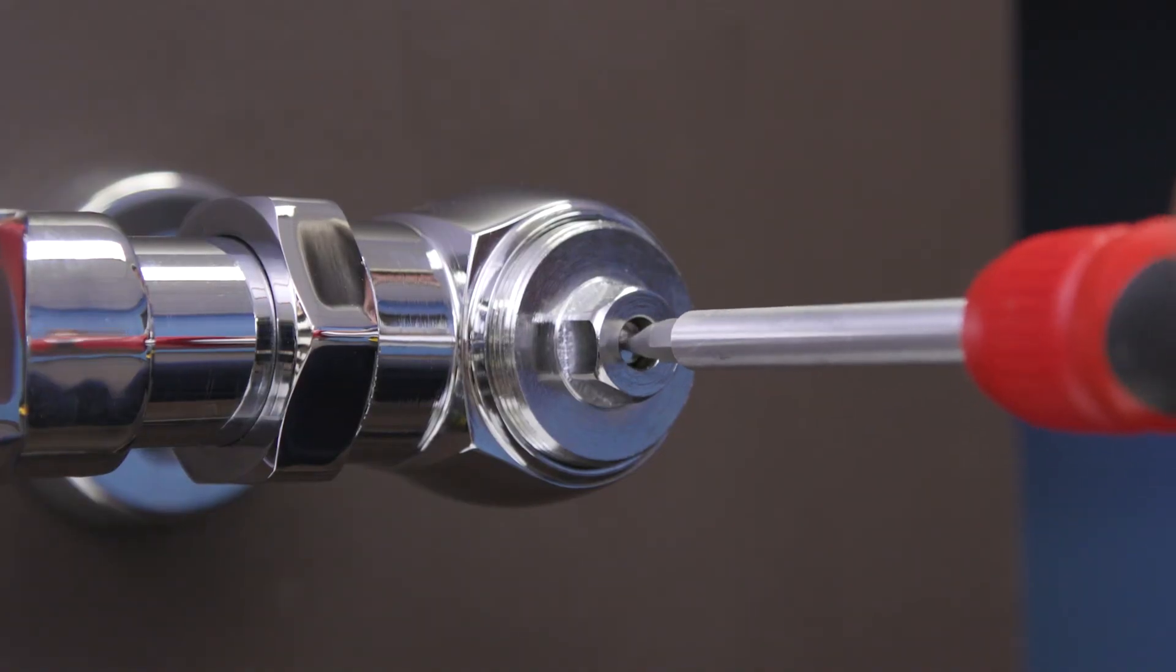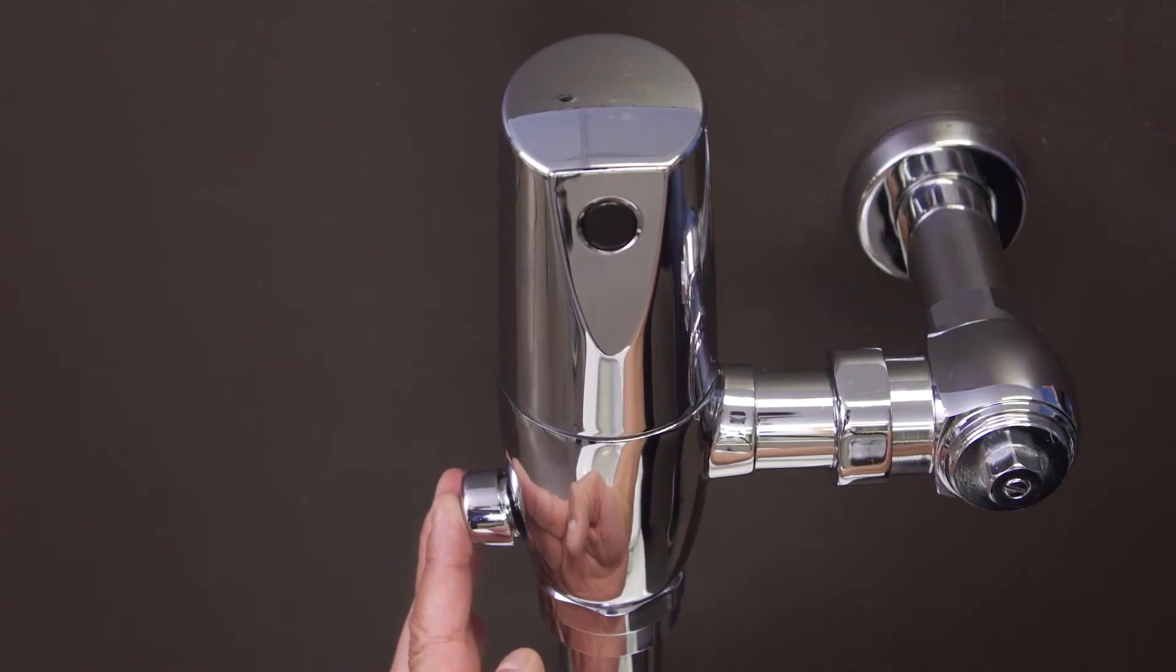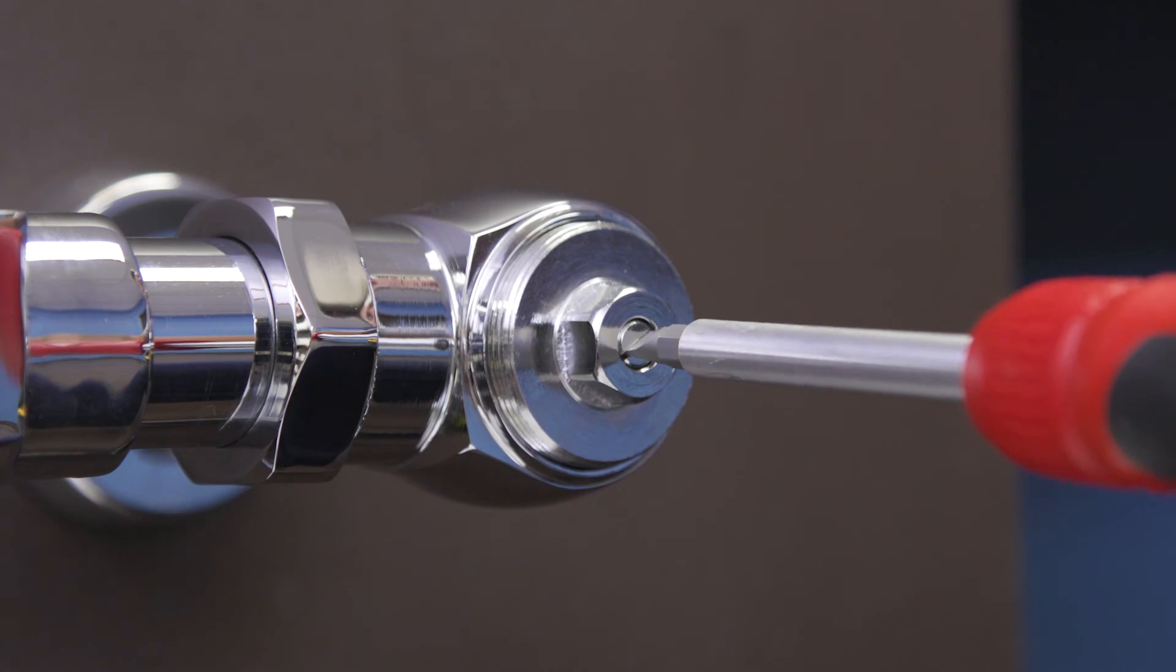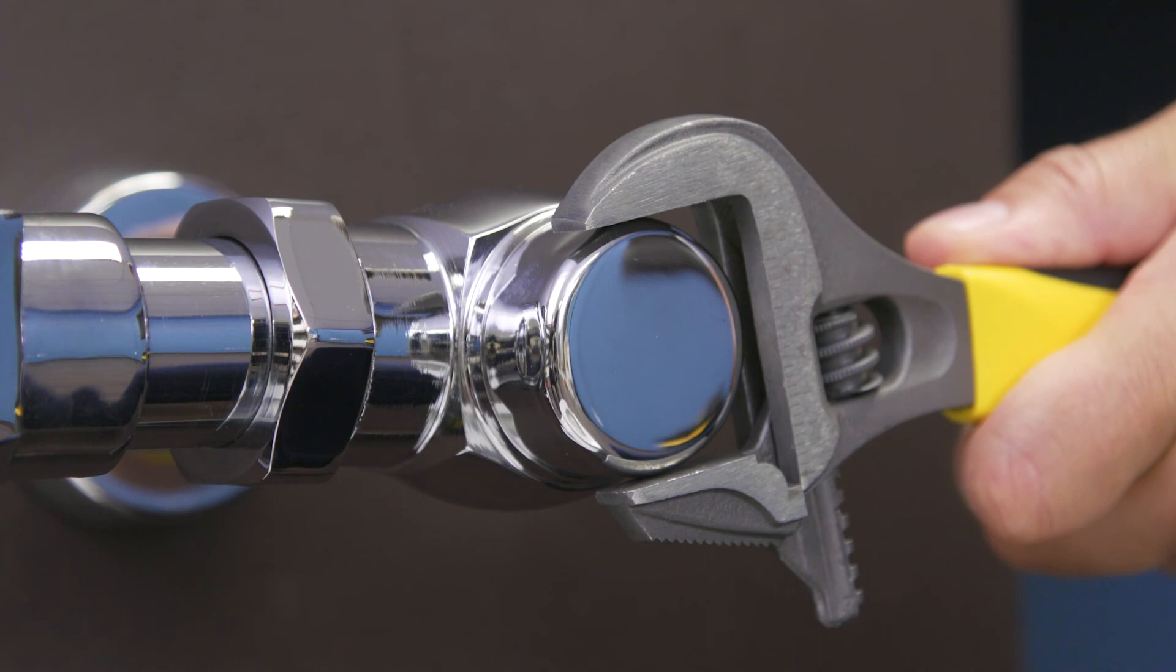Turn on the water by opening the control stop. Now test the flushometer and adjust the control stop until you get a normal flush with a quiet operation. Finally, replace the cap.